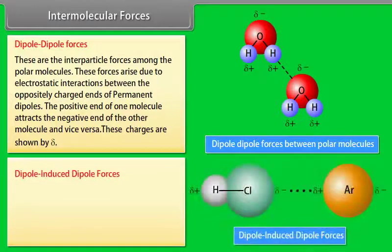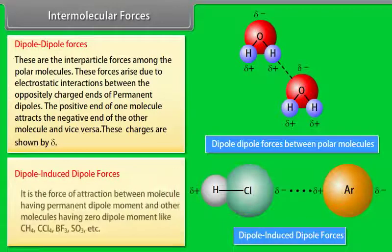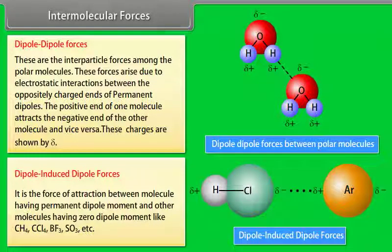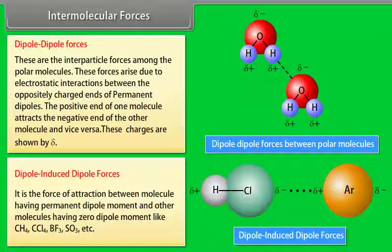Dipole-induced dipole forces: this is the force of attraction between a molecule having a permanent dipole moment and other molecules having zero dipole moment, like CH₄, CCl₄, BF₃, SO₃, etc. For example, a polar molecule such as HCl can induce a dipole in an argon atom by distorting the electron cloud. An electrostatic attraction exists between the ion or permanent dipole and the induced dipole. This intermolecular force is called a dipole-induced dipole attraction.